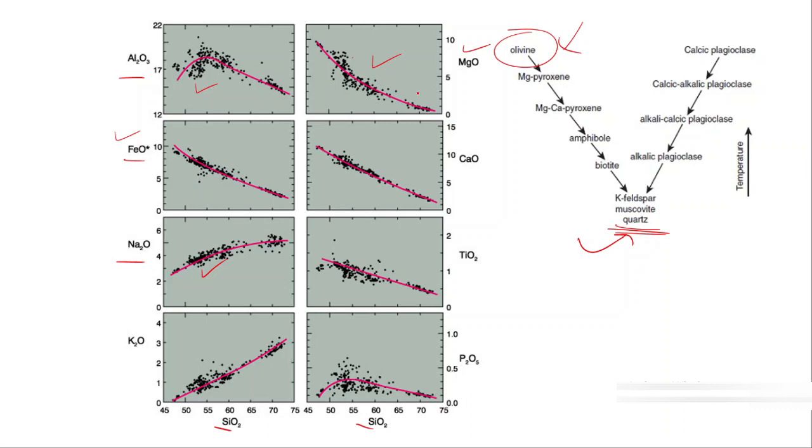Why are we seeing this decreasing trend of FeO and MgO? These two elements are going into olivine. They are being crystallized and deposited in olivine. Hence, in the residual melt, they are decreasing.